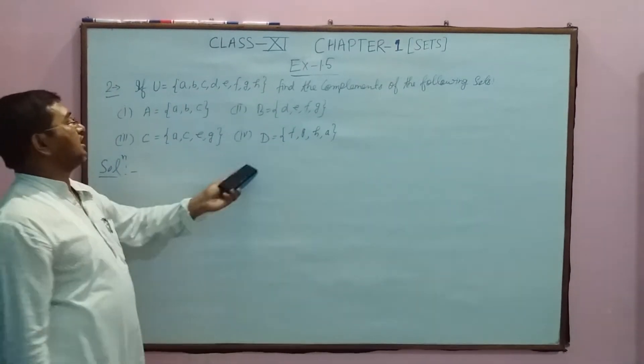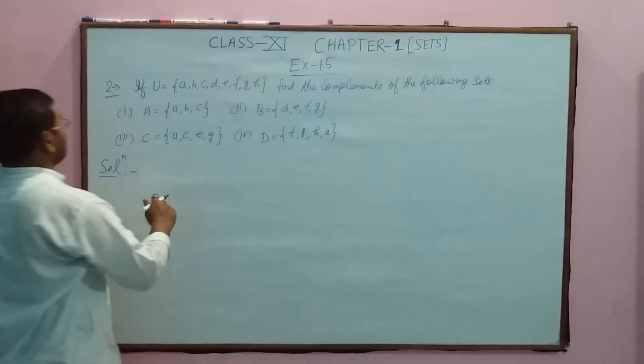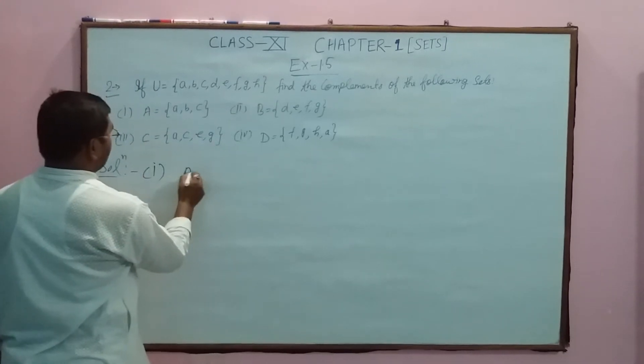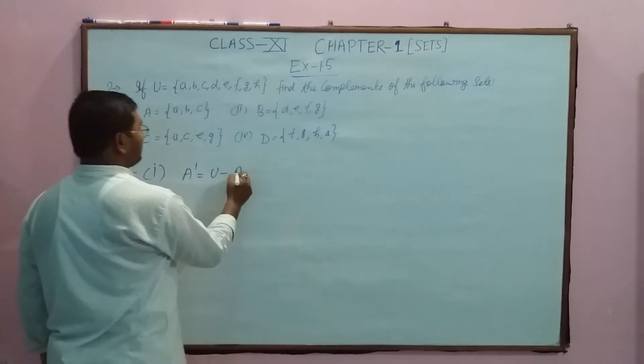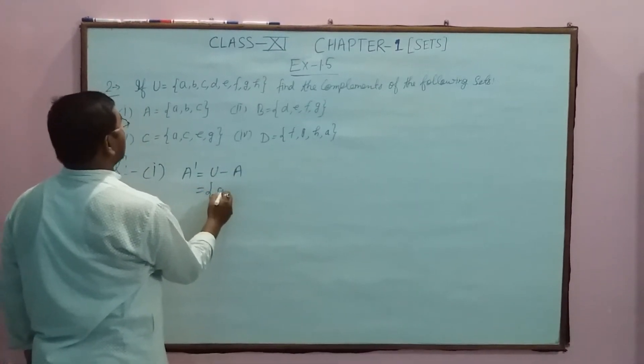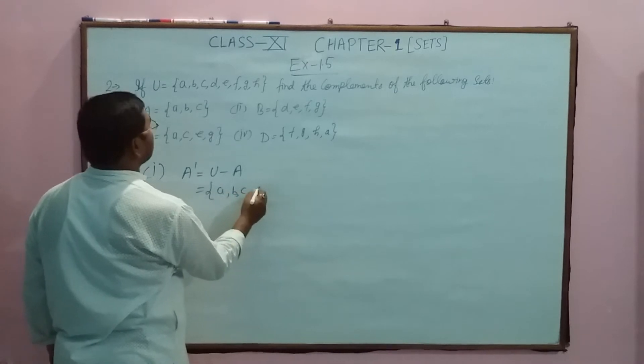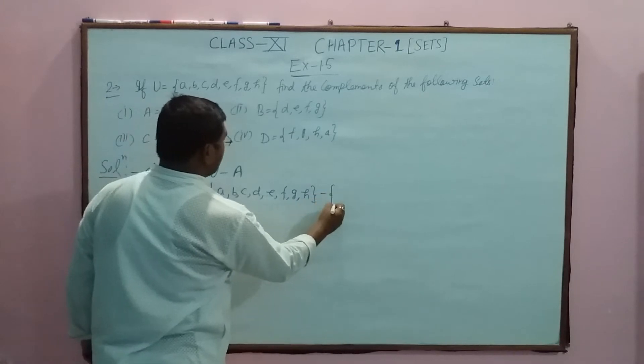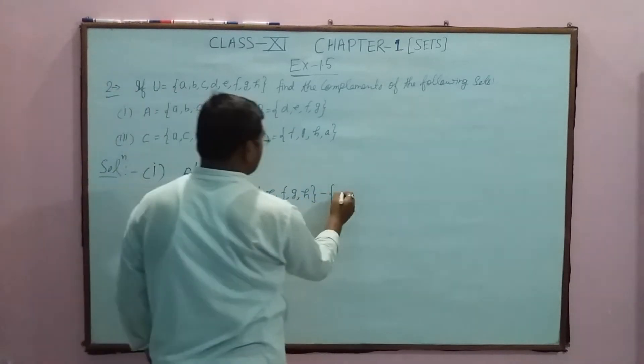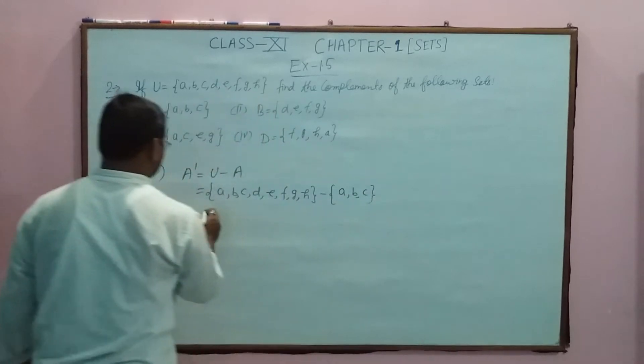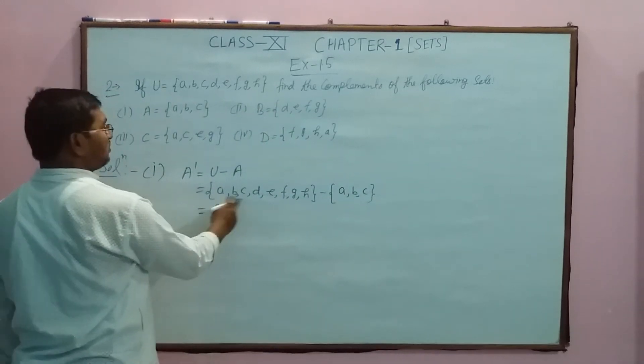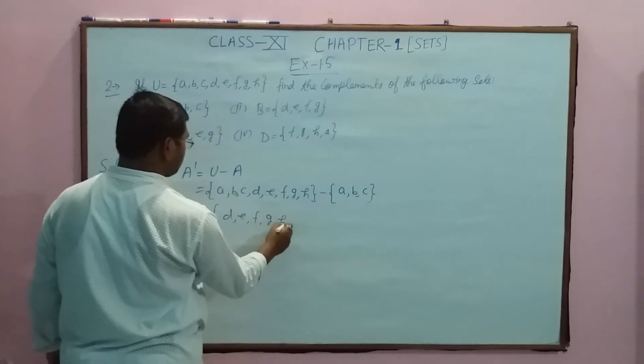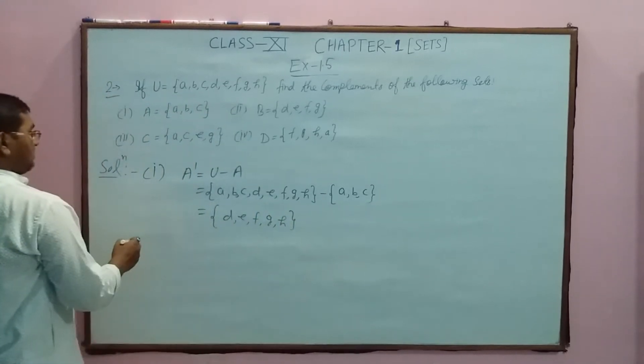We can find the complements. For part (a), listing the elements: a, b, c, d, e, f, g, h... The result includes b, c, e, f, g, h. This is the second part.